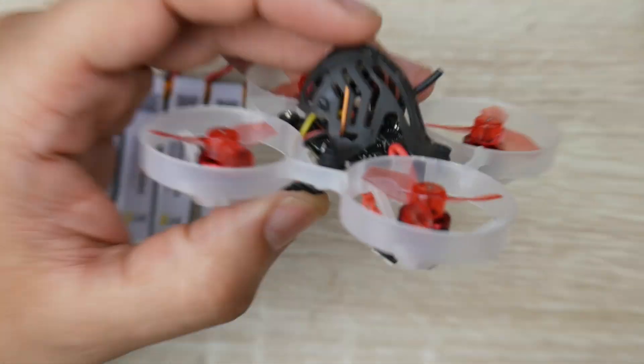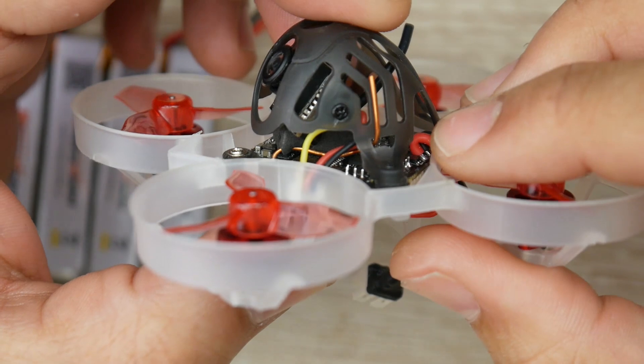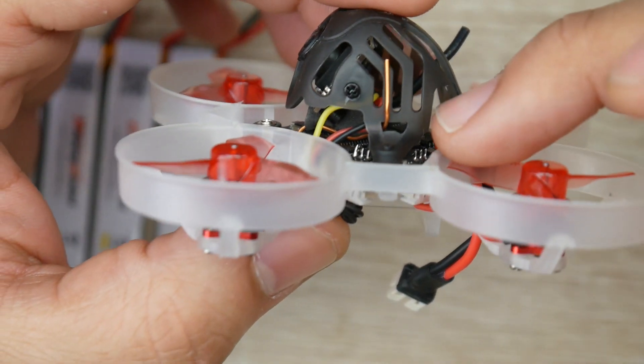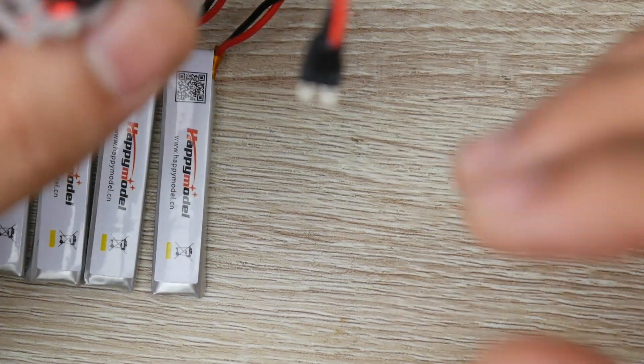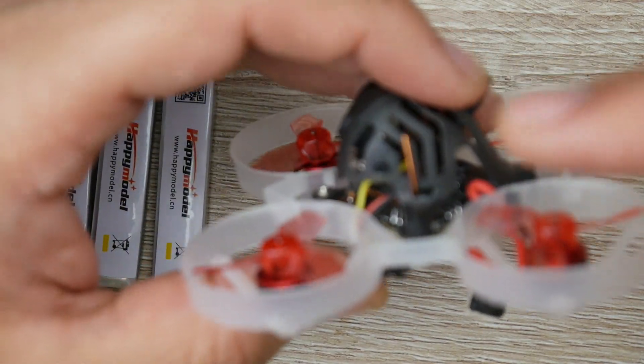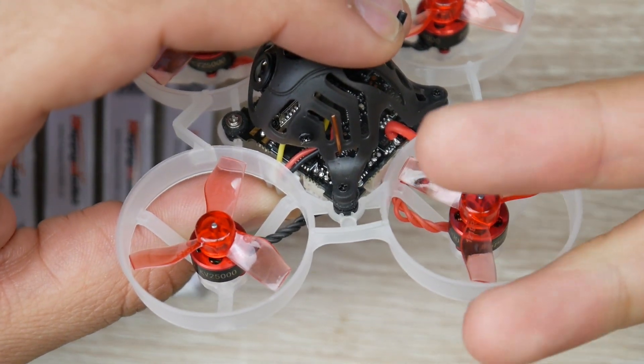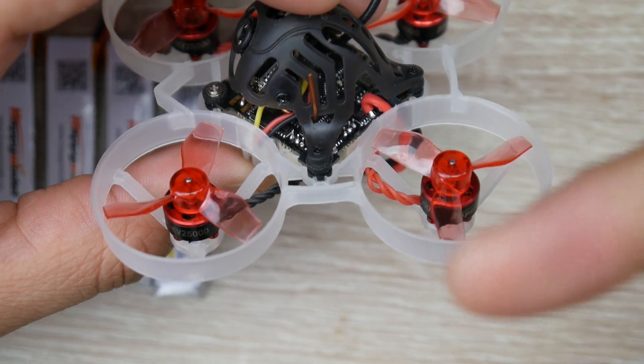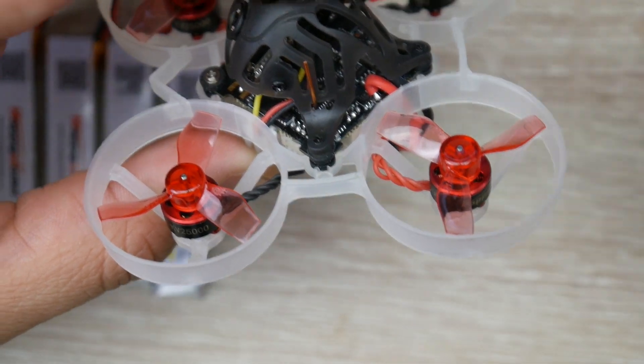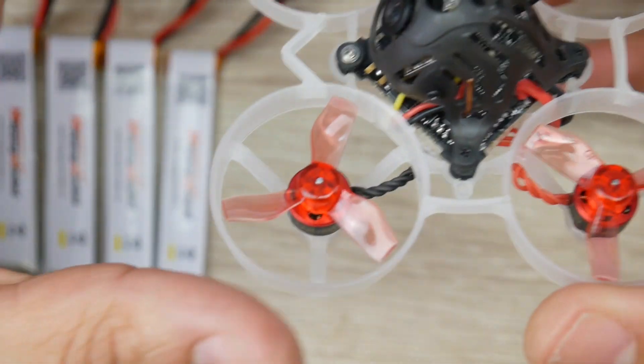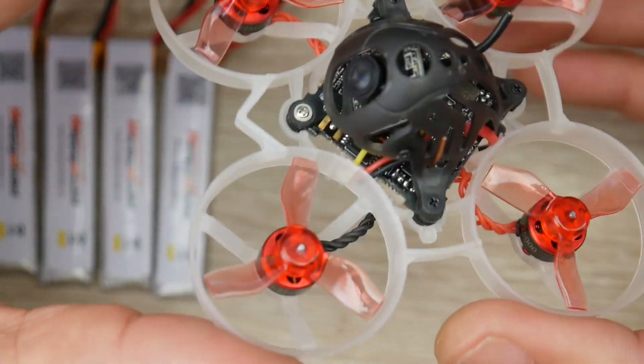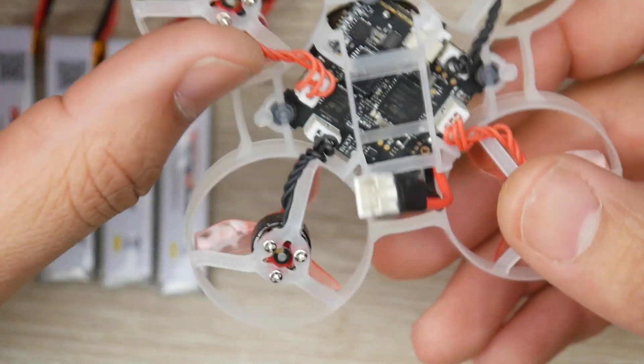If we take a closer look inside, we actually see we have nothing except one board and a camera. What that means is we have less weight. However, it also means we have the ESC, the flight controller, the OSD, the PDB, the video transmitter, and the receiver built into one board, which is freaking insane. We've never had something like this before.